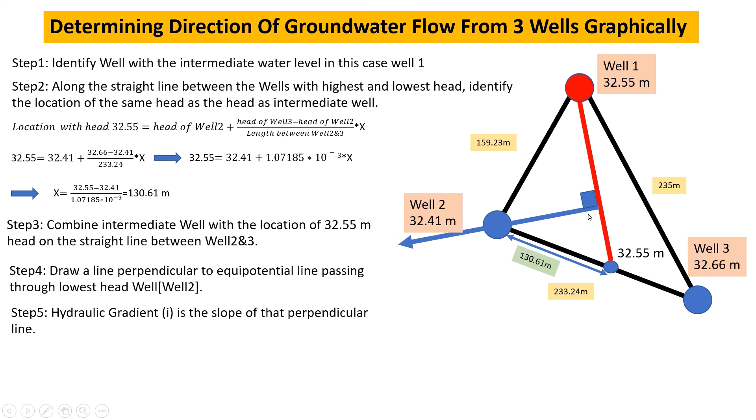To determine hydraulic gradient, we calculate the distance from this point to Well 2, which is 115.96 meters. Hydraulic gradient equals 32.55 minus 32.41 divided by 115.93, which equals 0.0012. Don't forget to like the video and subscribe to our channel. Have a nice time!